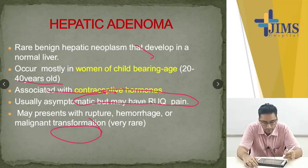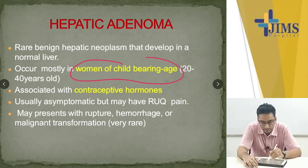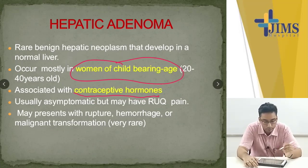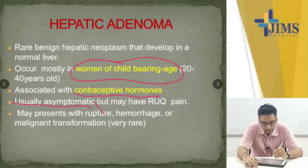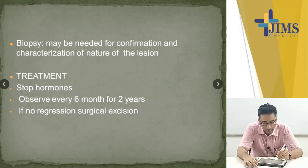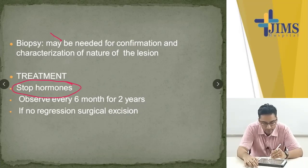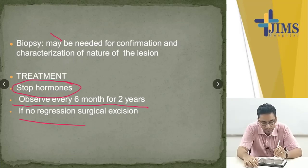Hepatic adenoma occurs in women of child-bearing age. It is associated with contraceptive hormones. Usually asymptomatic, but may present with rupture or hemorrhage. Biopsy may be needed. Treatment: firstly stop the OCPs and observe every 6 months for 2 years. If no regression, we should surgically excise the tumor.